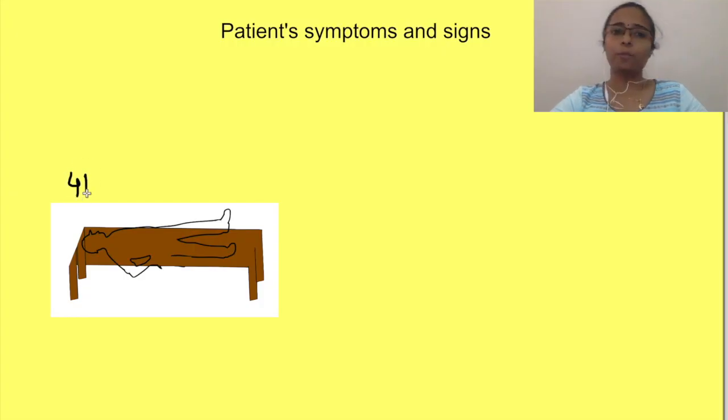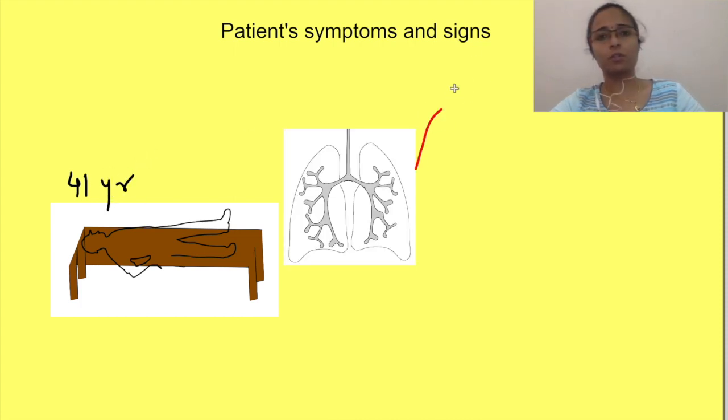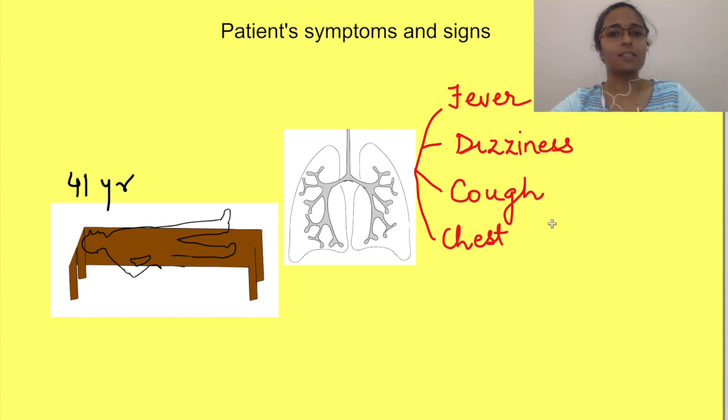A 41-year-old patient who worked at a local seafood market presented with severe respiratory syndrome symptoms of fever, dizziness, unproductive cough and chest tightness and was admitted to Wuhan Central Hospital.